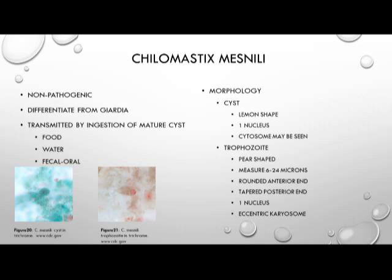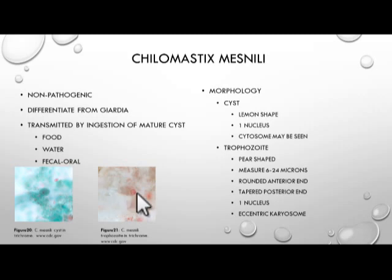Next we have Chilomastix mesnili, which is non-pathogenic but needs to be differentiated from Giardia. Like Giardia, transmission occurs from ingestion of the mature cyst through food, water, or fecal-oral transmission. The cyst is lemon-shaped with one nucleus, and a cytosome may be present. The trophozoite is pear-shaped, measures 6 to 24 microns with a rounded anterior end and a tapered posterior end, and it has an eccentric karyosome present.